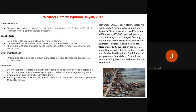A shorter summary of Typhoon Haiyan 2013 with impacts and responses is shown on the right of the screen. Images illustrate the scale of devastation to an area of the Philippines that was already not extremely well developed, meaning it had existing vulnerabilities.